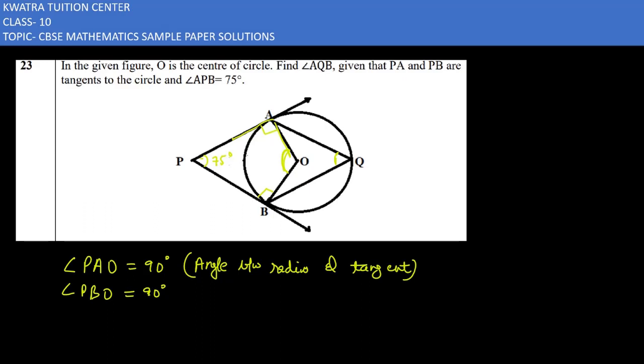Now what you can do is you can find this angle. You can use angle sum property of a quadrilateral. So how much is the fourth angle AOB? Now we find AOB. We have 75 for the first angle, 90 for the second angle, 90 for the third angle, and the fourth angle we will mention as AOB.